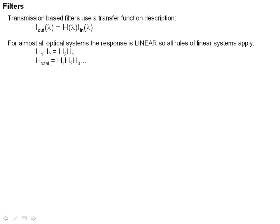The types of filters we're talking about here are transmission filters, ones that pass the wavelengths you want and block the wavelengths you don't. We use our transfer function description of light for this. So the output intensity is just the transmission function of the filter we call H or T of lambda multiplied by the input intensity.